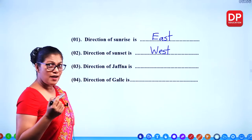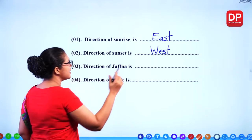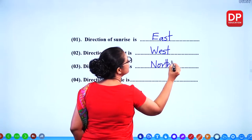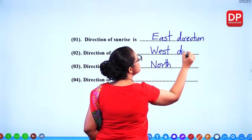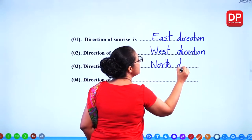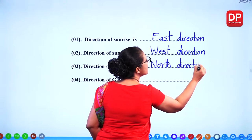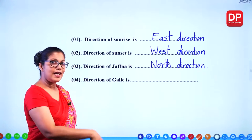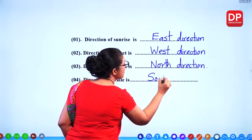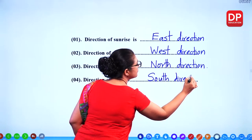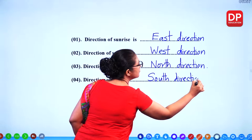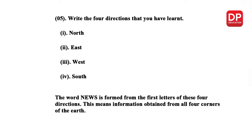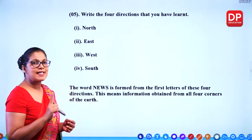The direction of Jaffna — we already know it's in the north direction. The direction of Gaffna is in the south direction. So what are the main directions you have learnt before? North, east, west and south.